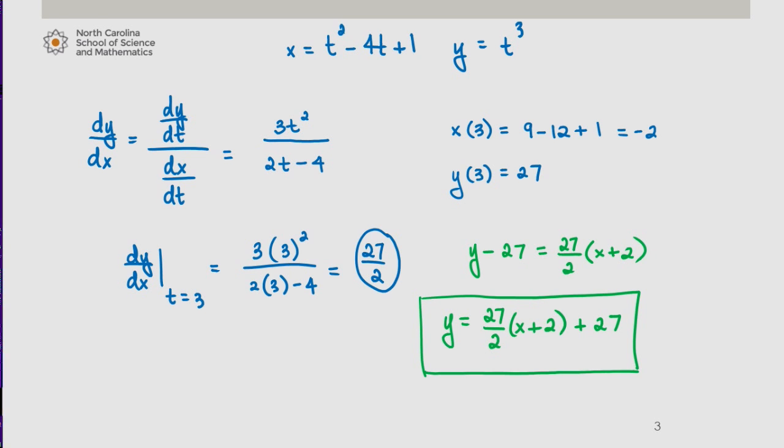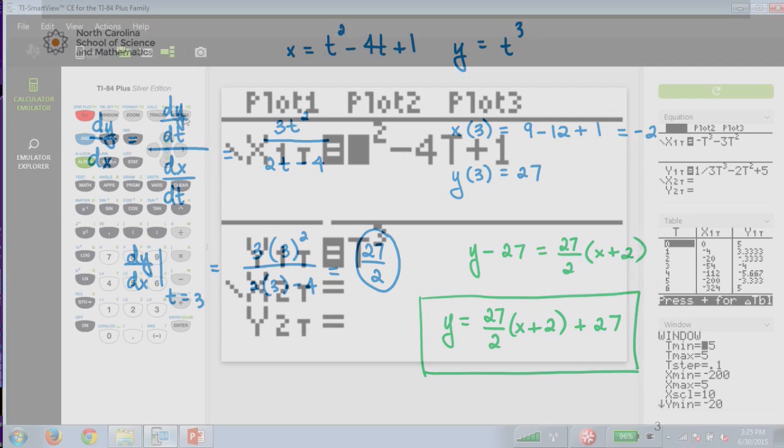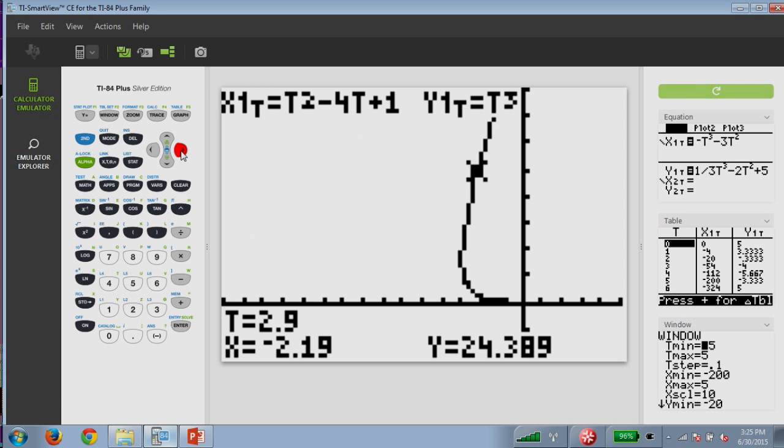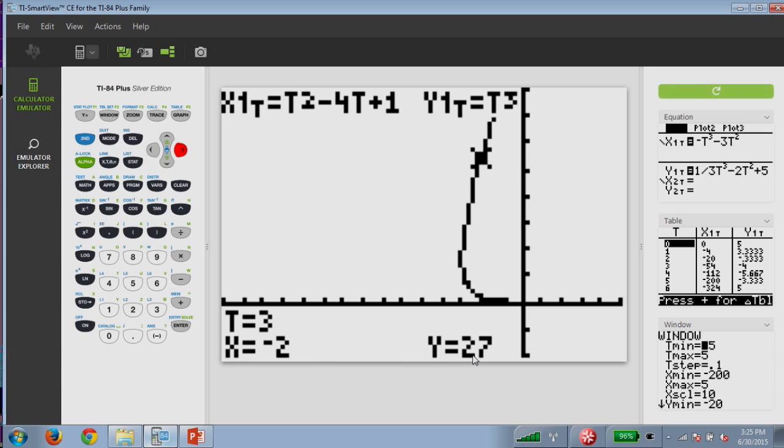Let's take a look at the graph to see if this is reasonable. We're going to graph the equations. We see our coordinate at (-2, 27), and we have a tangent line with a positive slope. This seems to be a reasonable result.